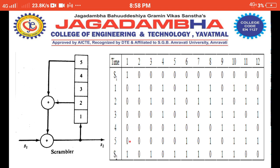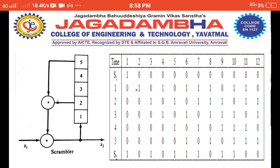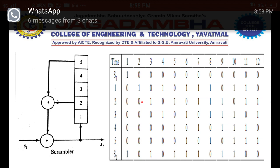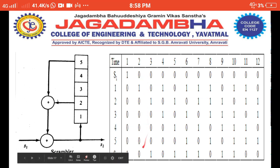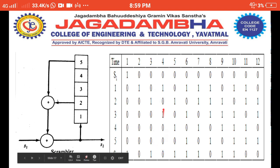Now perform the scrambling process. Shift register 2 content is 0, shift register 5 is 0, so 0 XOR 0 = 0, and 0 XOR S1 (which is 1) gives 1. So we get the first scrambled bit = 1. This bit is shifted into shift register 1, then 1→2, 2→3, 3→4, 4→5. Again: 0 XOR 0 = 0, and 0 XOR 0 = 0. Next: 1 XOR 0 = 1, and 1 XOR 0 = 1. Again: shift register 2 = 0, shift register 5 = 0, so 0 XOR 0 = 0 XOR 0 = 0.